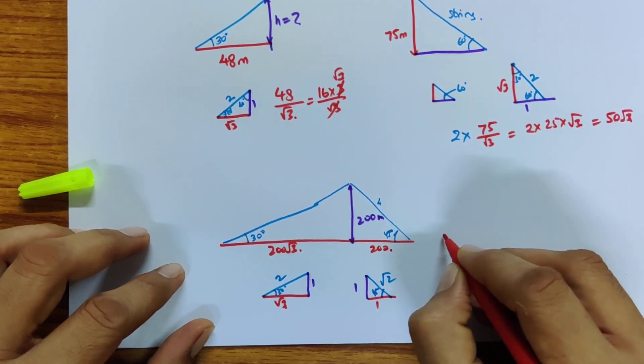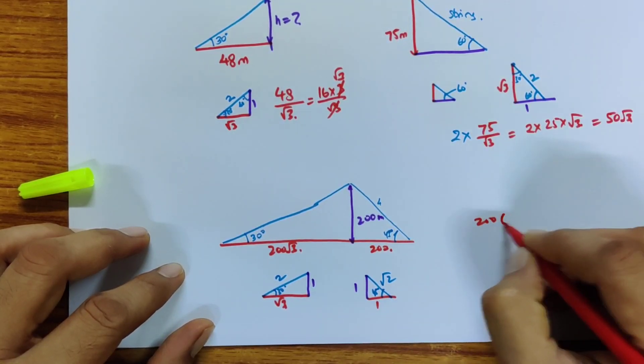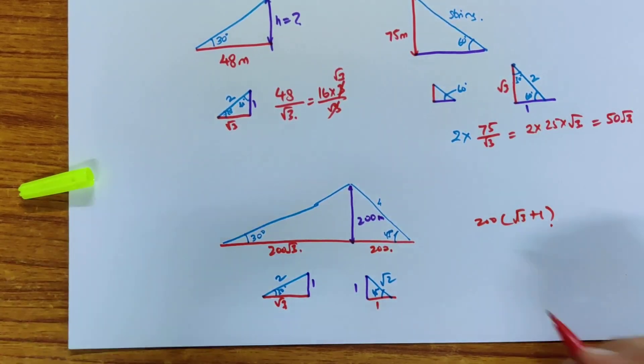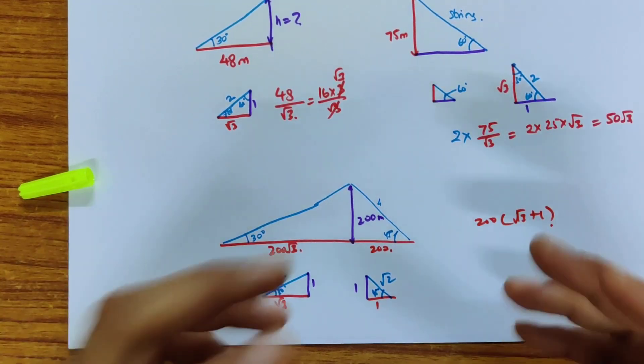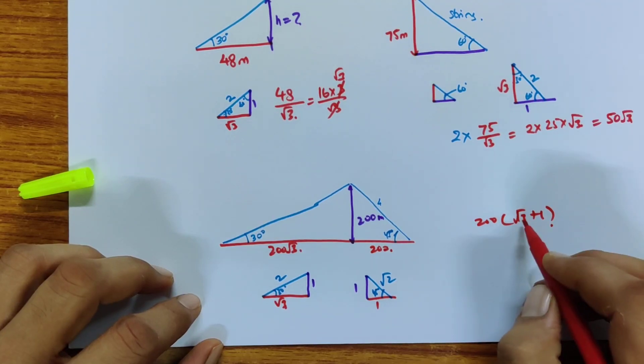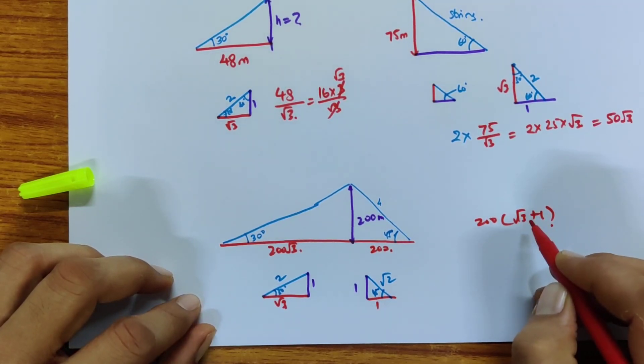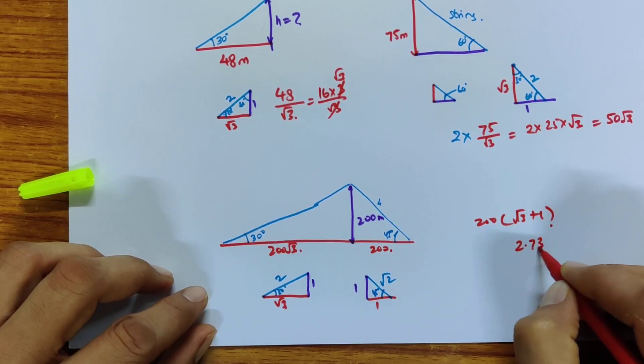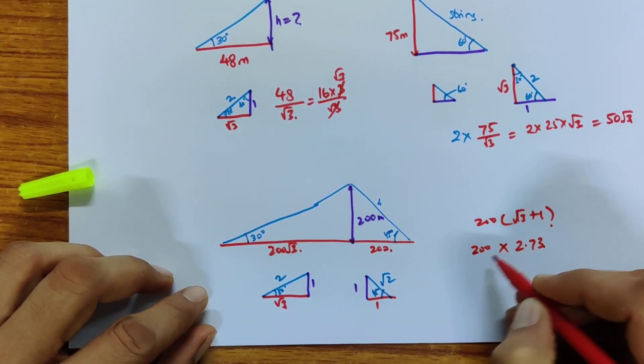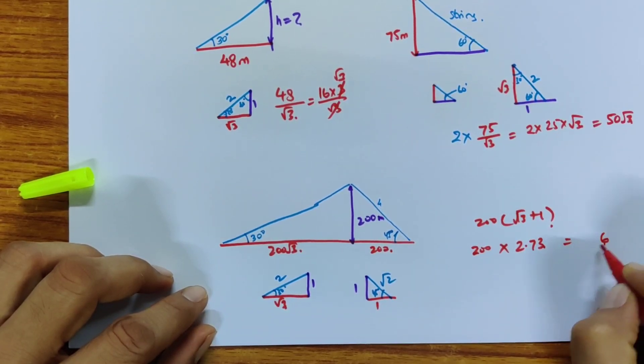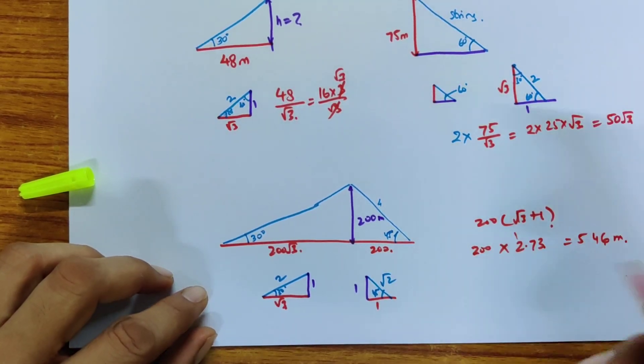So the sum of these two is basically 200 into 1, and this is root 3 plus 1. If you need exact distances, you put 1.7, it's not exact. If you need in decimal, then you get the closest approximation to root 3 which is 1.732. So you get this is 2.73 or something like that times 200. Since it's 200, it's 273 times 2, which is doable. So 546 meters.